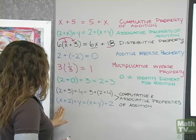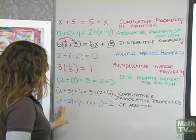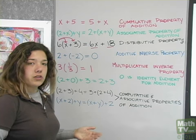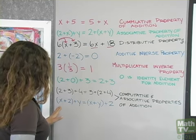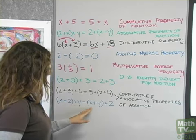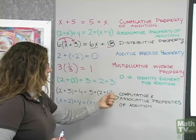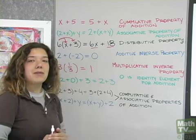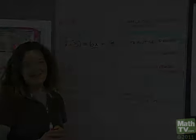And then down here we have quantity 2 plus 3 plus 4 equals 3 plus the quantity 2 plus 4. And quantity x plus 2 plus y equals the quantity x plus y plus 2. That's the commutative and associative properties of addition. Thank you.